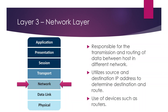Layer three is the Network layer, responsible for the transmission and routing of data between hosts on different networks. It uses source and destination IP addresses to determine the route. This is where all routing decisions happen, and devices like routers operate at this layer.